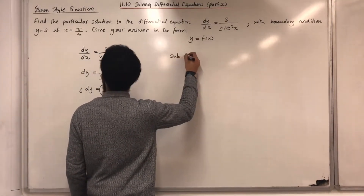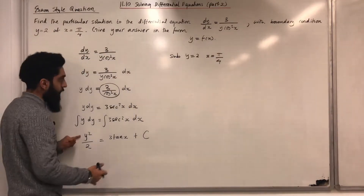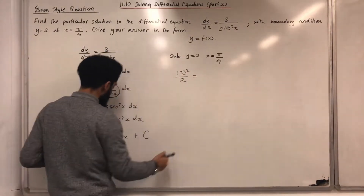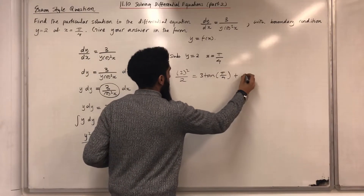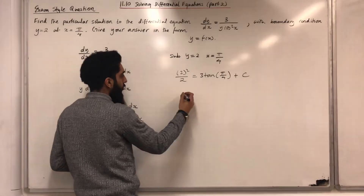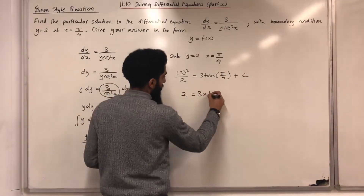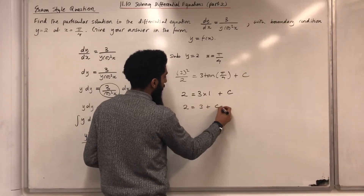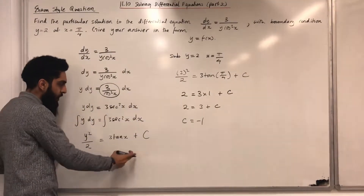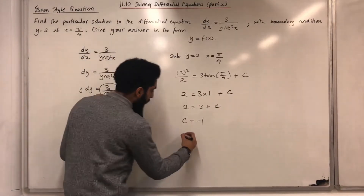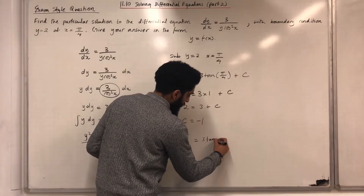The next step is to work out c by substituting y = 2 and x = π/4 into the equation. Doing this gives 2²/2 = 3 tan(π/4) + c. Now 2² is 4 divided by 2 is 2, and tan(π/4) = 1, so 2 = 3 + c, hence c = 2 − 3 = −1. Now I can write the equation again with the c value: y²/2 = 3 tan x − 1.